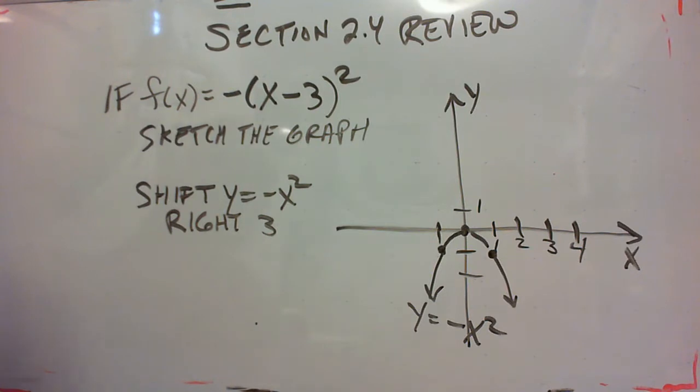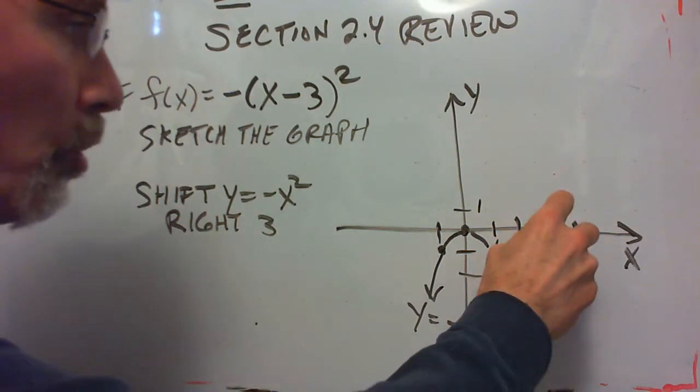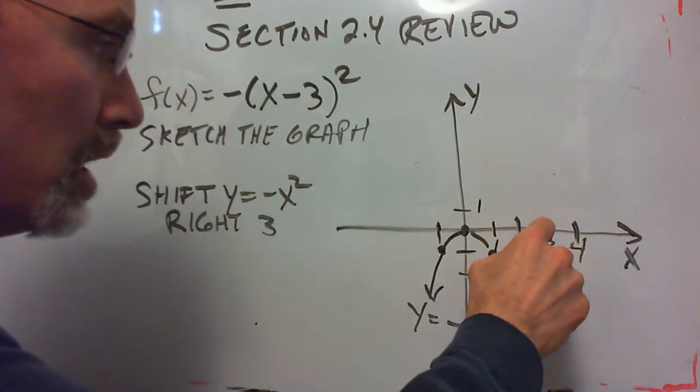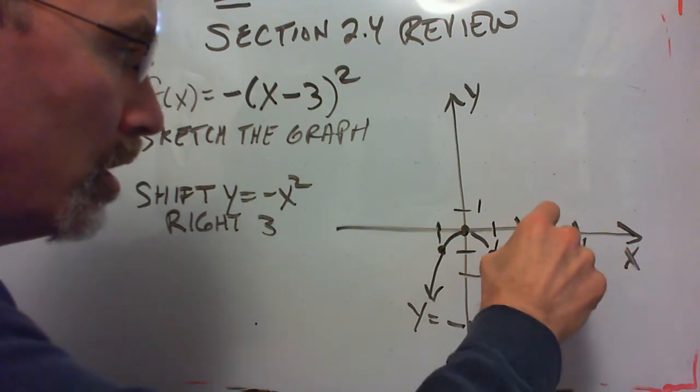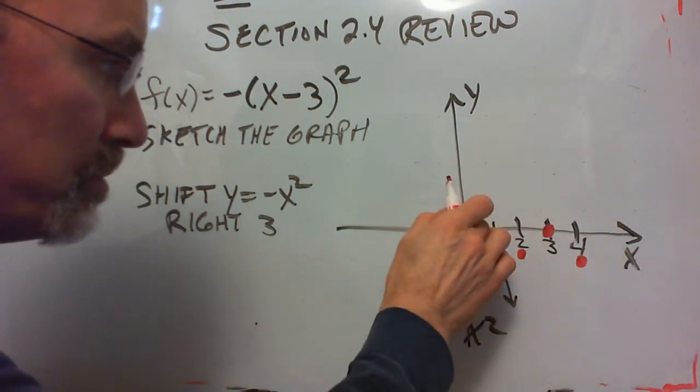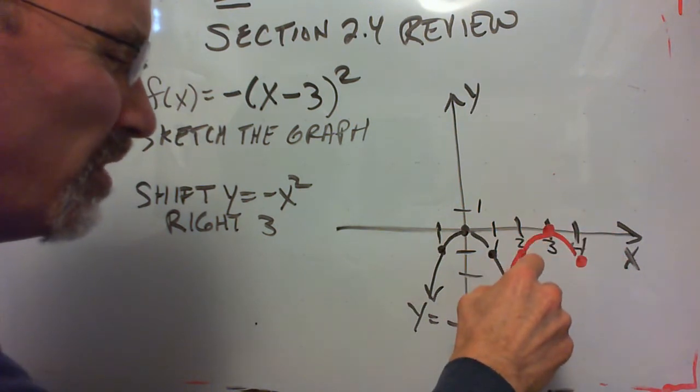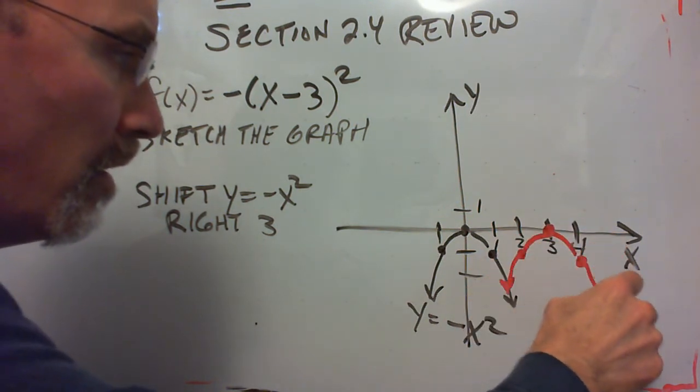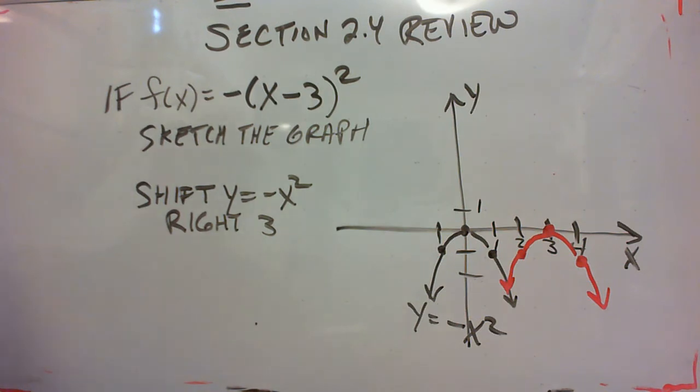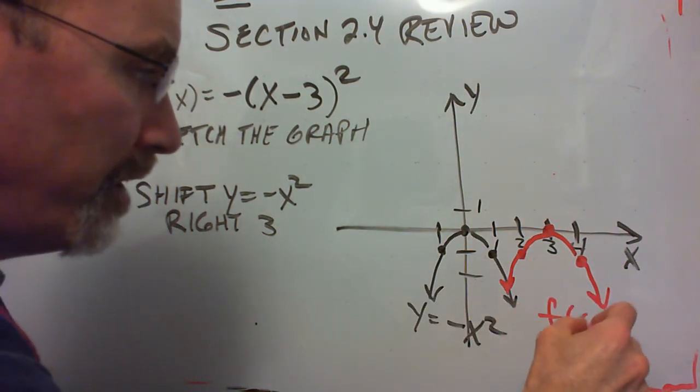So we just shift this parabola over 3. So the vertex is moved from 0, 0 to 3, 0. And there's our graph of f of x.